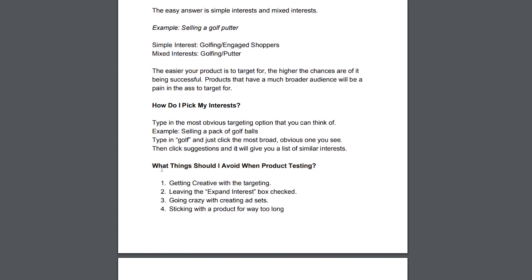What things should you avoid when product testing? Getting too creative with the targeting. If you're selling golf, you don't want to do golfing narrowed down by putter, narrowed down by online shopping, narrowed down by this and that — super complicated. I like to keep it to one or two things. If I'm doing two things, I do it in that format; if I'm doing one thing, it's either with engaged shoppers or without. I keep it really simple and don't try to get too creative with it.